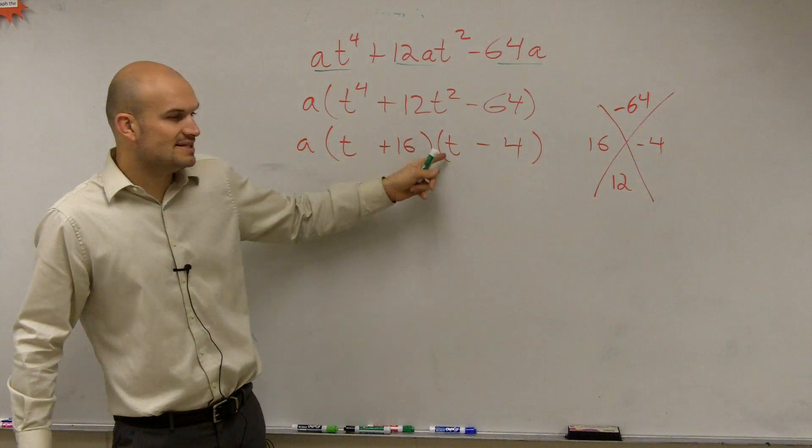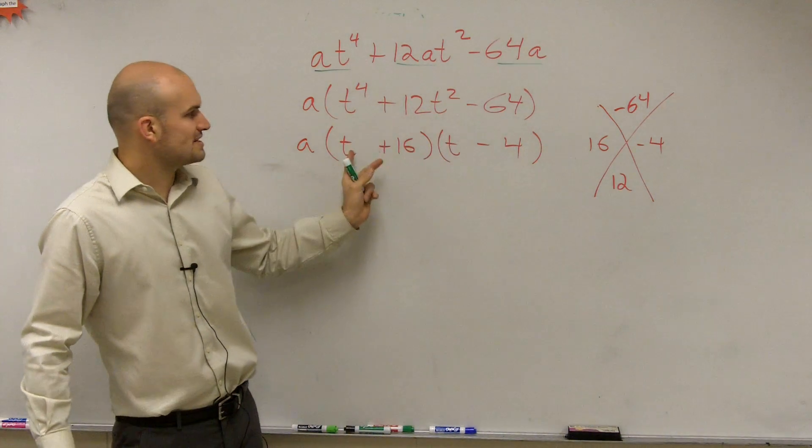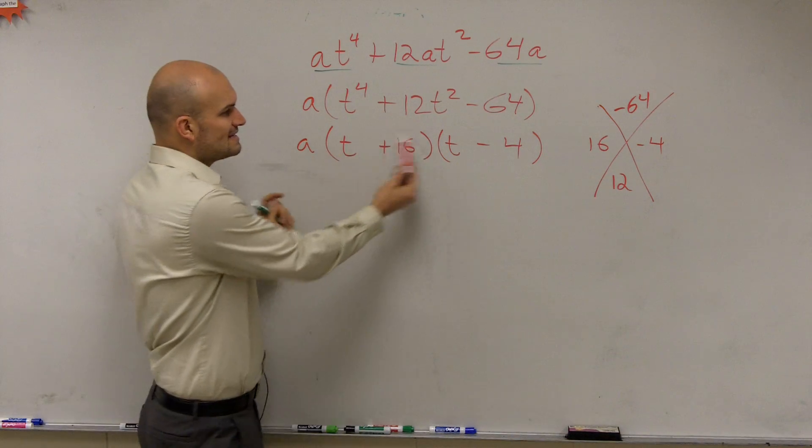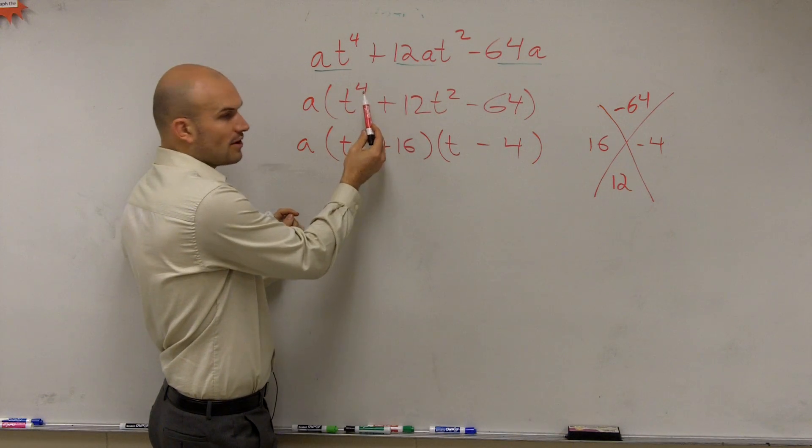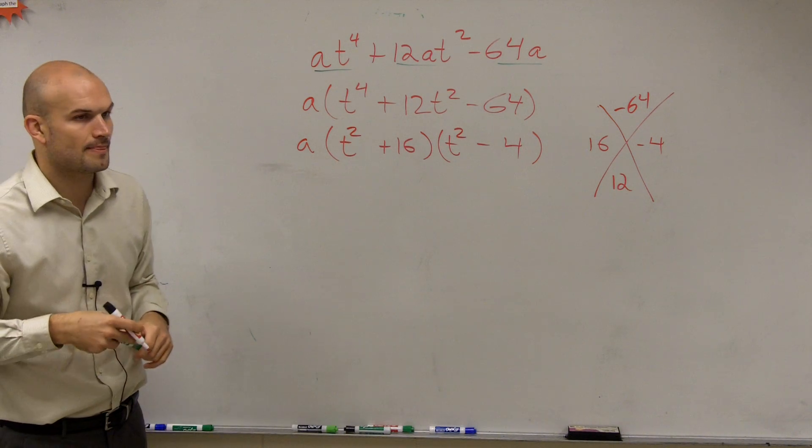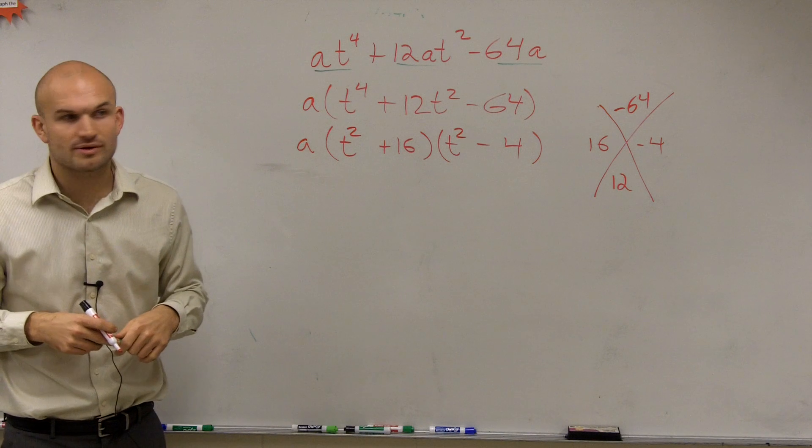But the problem is, 16 times t and negative 4 times t, we need to get that to be t squared. Also, t times t needs to be t to the 4th. So we're going to write that as t squared times t squared. And that would be your factor form for number 24.